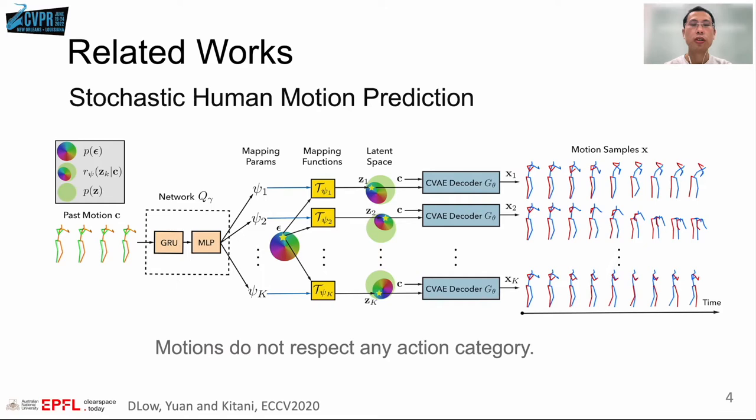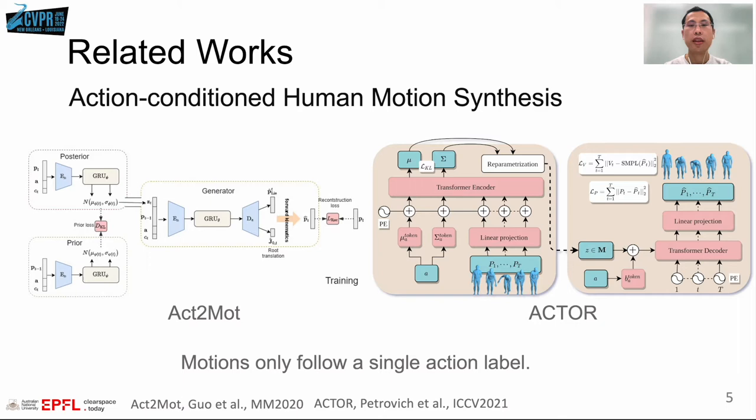Previous motion prediction works, for example DLow, cannot predict future motions that respect a specific action category. Although action-conditioned motion synthesis methods can produce motions of certain actions, they cannot model transitions between different actions, which is a main focus of our task in this paper.